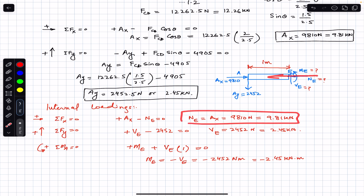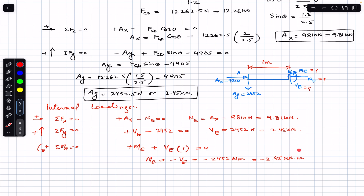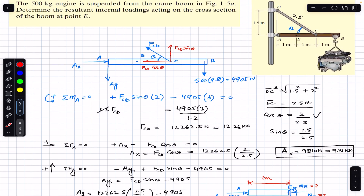The internal loadings at E are: Ne equals 9.81 kN along the beam axis, Ve equals 2.45 kN shear force at the cross-section, and Me equals minus 2.45 kN·m bending moment. The negative sign indicates the moment is actually clockwise, meaning the upper part of the cross-section is in tension and the lower part is in compression. Subscribe to Engineers Academy for more problems from Chapter 1 on internal loadings, and like this video if it helped your learning.